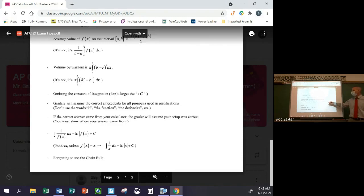If the correct answer came from your calculator, graders will assume your setup was correct. I kind of said this before. Make sure you say what you're doing if you're getting your calculator answer. This is a common integration error. If somebody has one over a function, that doesn't necessarily mean that its integral is ln of that function. That's only true if that function happens to be like a linear function whose derivative is one. That's the only case where this is true. So don't generalize that to be all the time.